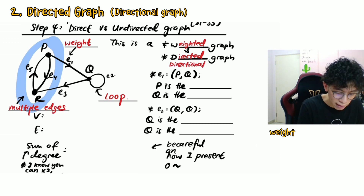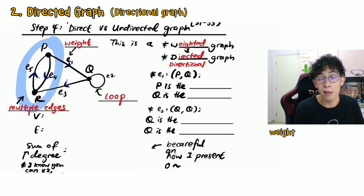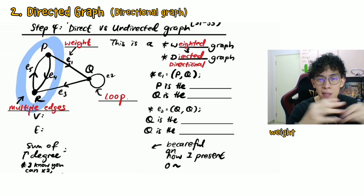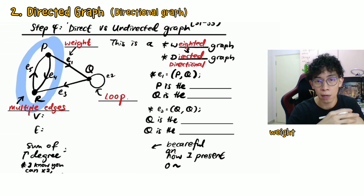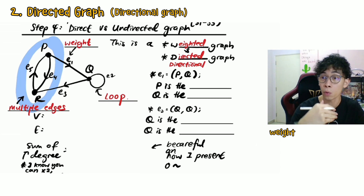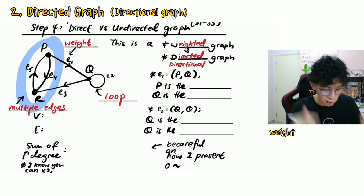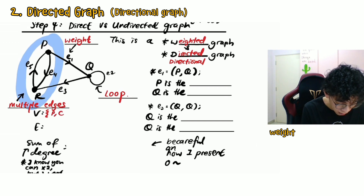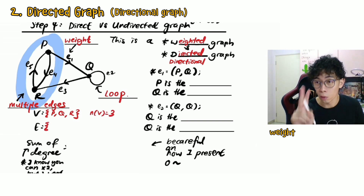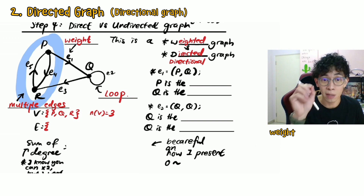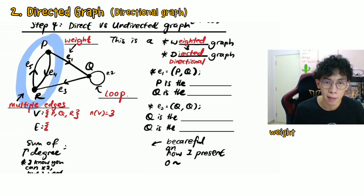Directional means there are arrows pointing in a specific direction. When there is a specific arrow, you have to be extra careful with the directions — the presentation will be much different. Just as I did three examples for the undirected graph, here I'll do two examples since you roughly know how it goes already.